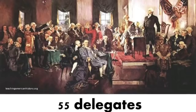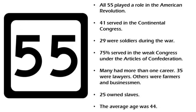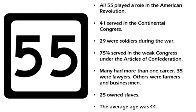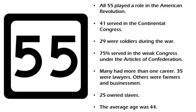The fifty-five delegates who did show up were like a group of all-stars from the thirteen states. All fifty-five of them played some sort of role in the American Revolution, whether they served in the Continental Congress or they fought during the war. Seventy-five percent served in the Congress under the Articles of Confederation. Many of the delegates had more than one career — thirty-five were lawyers, and others were farmers and businessmen. Twenty-five of the delegates owned slaves, and the average age was forty-four.